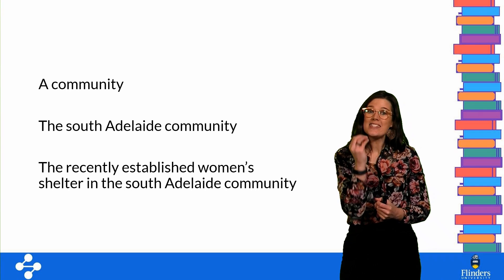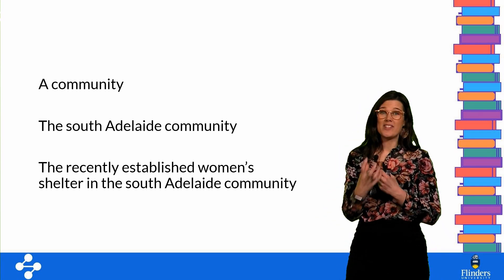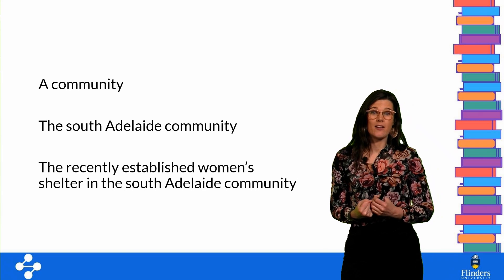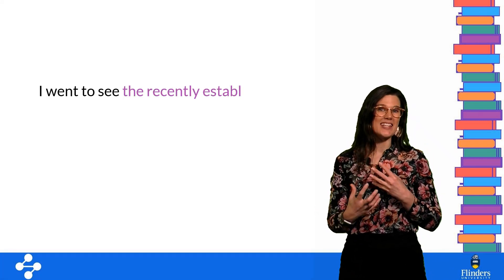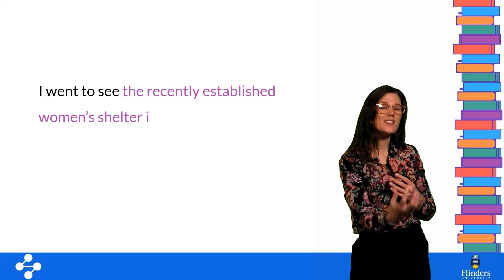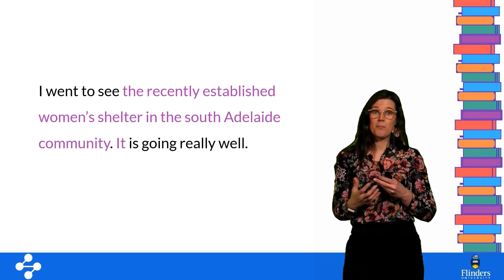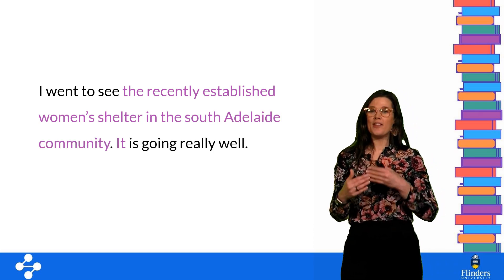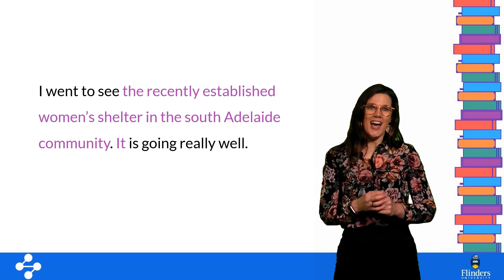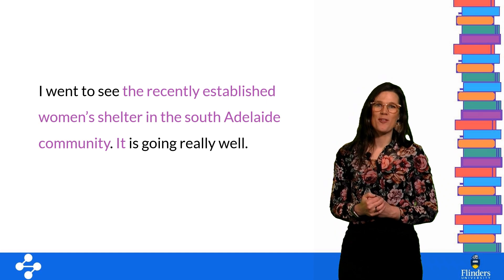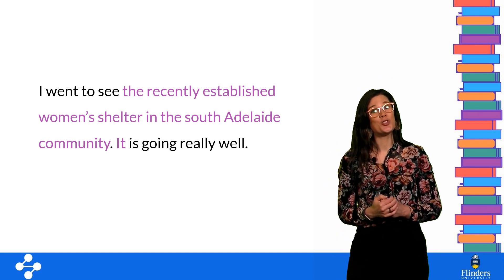Remember, once again, you could replace this whole phrase with a single pronoun — 'it.' So a following sentence might say 'it is going really well,' with 'it' referring to the recently established women's shelter in the South Adelaide community. Of course, just because you can make your noun phrases this long, it doesn't always mean that you should.